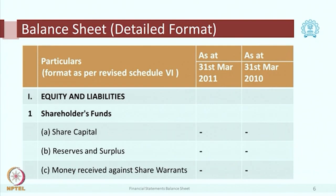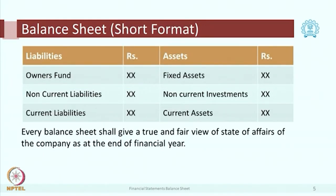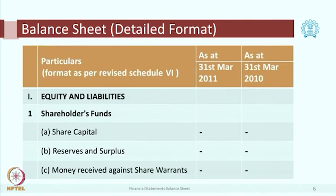Now let us go to a detailed balance sheet. This is the official format as per Schedule 6 of the Companies Act. This particular format was introduced in year 2011 — that is why I have kept 10 and 11 there. For a corporate balance sheet, 2-year data is to be given, so you can see 2 columns: one for 2010 and the other for 2011. The first item starts with equity and liabilities — item I is shareholders funds.